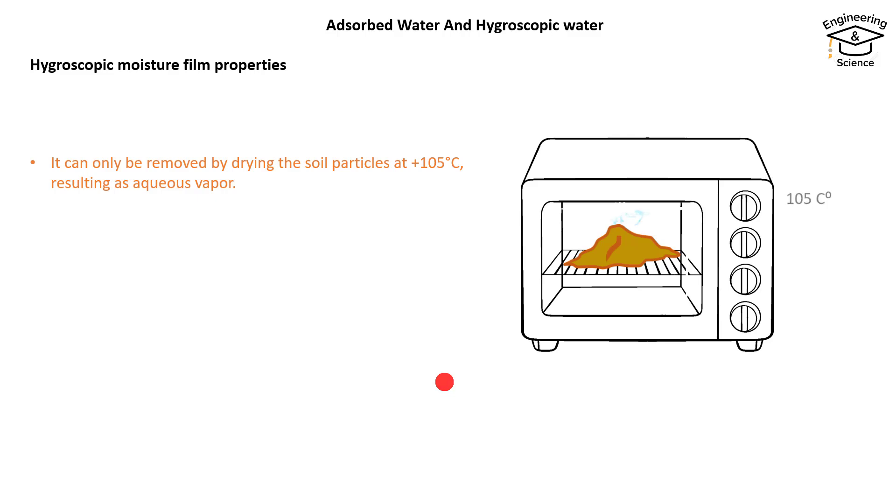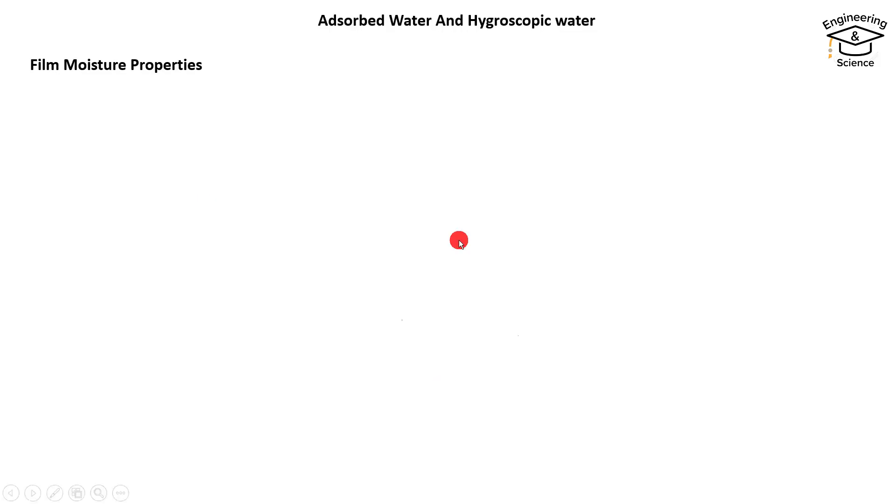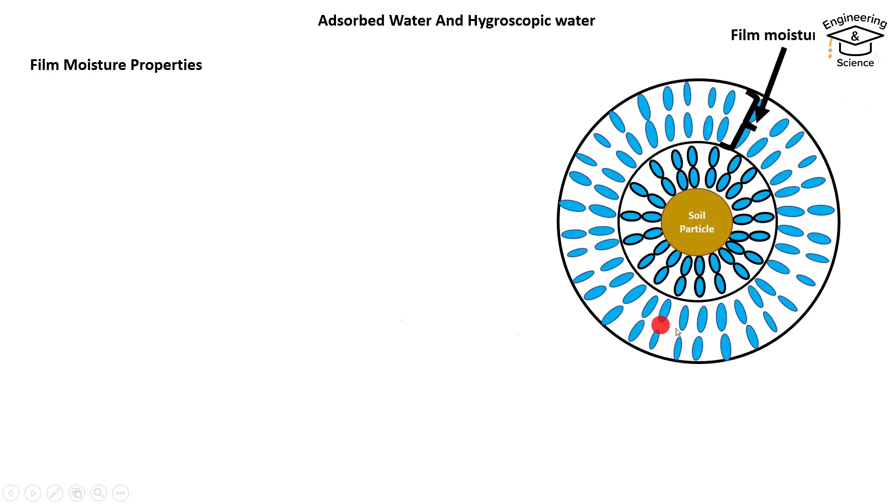That was the properties of hygroscopic moisture film. Let's describe the film moisture properties, the second layer of water around the soil particle.